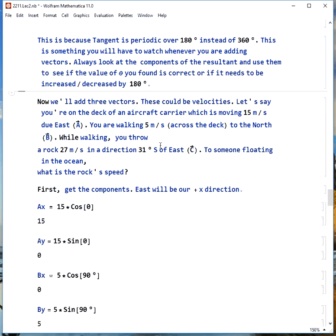Now we'll do a more complicated example. Let's say we have three vectors and they could be velocities. We want to add them up and see what we get. So, for example, let's say you're on an aircraft carrier moving 15 meters per second to the east. The aircraft carrier's velocity vector is A. You're walking across the deck, perpendicular to it, to the north. Your velocity vector relative to the ship is vector B. While you're walking, you throw a rock 27 meters per second in a direction 31 degrees south of east. That will be vector C. If someone's floating in the ocean, what's the speed of the rock? Well, to figure that out, they're going to have to add up these speeds of the ship and you walking and you throwing the rock.